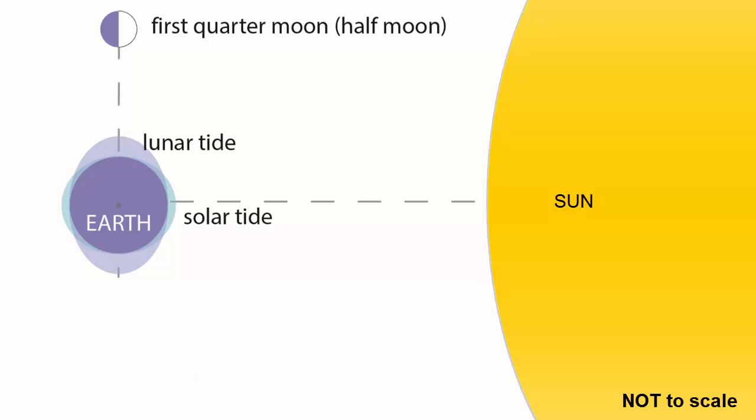We can show that more clearly in this image, which is also not to scale, but nonetheless shows that there are always two bulges associated with the solar tides. One on the side facing the Sun, which is being pulled toward the Sun with a greater force than the other on the other side away from the Sun, which is also being pulled toward the Sun, but as it's further away, not as strongly.